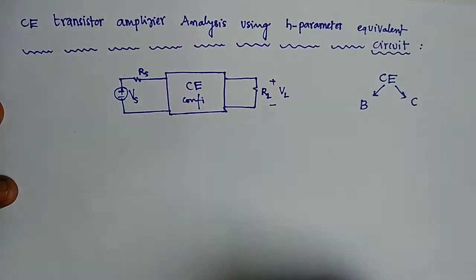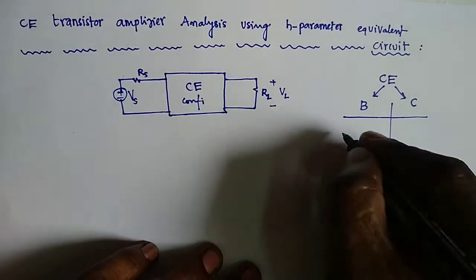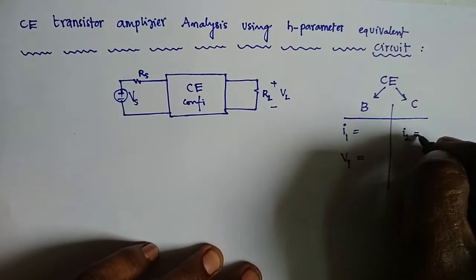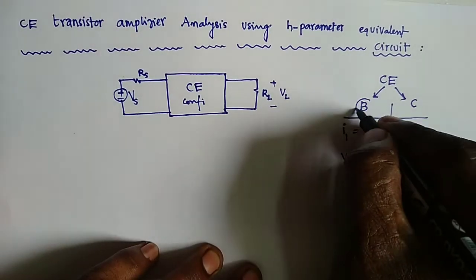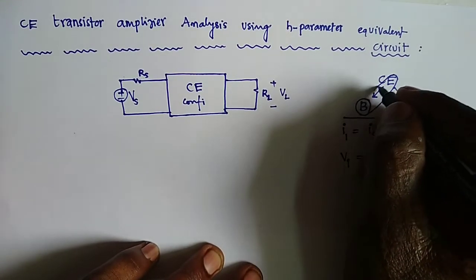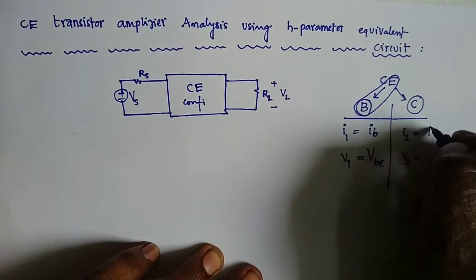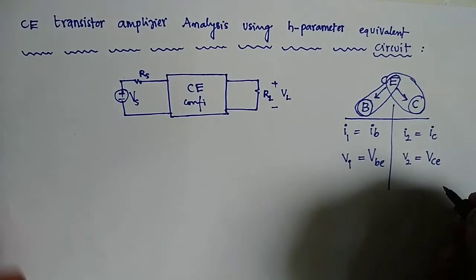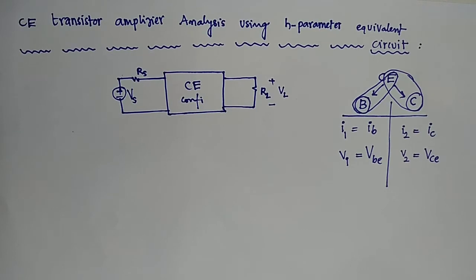In common emitter configuration, the input terminal is the base and the output terminal is the collector. This can be represented as input current I1, input voltage V1, output current I2, and output voltage V2, or simply I0 and V0. The input current is IB, the voltage drop between the two terminals is VBE between base and emitter, and the output current is IC with output voltage VCE.